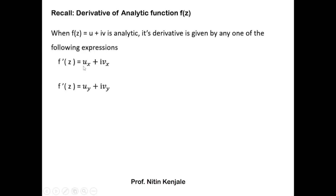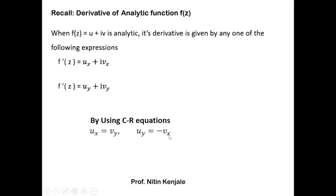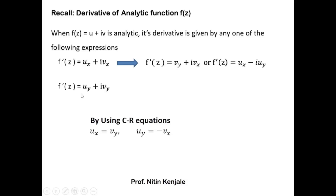But if you want to find f'(z) in terms of only u, you have to use the Cauchy-Riemann equations. The Cauchy-Riemann equations state that u_x = v_y and u_y = −v_x. So wherever u_x appears you can replace it by v_y, and you can replace v_x by −u_y, turning the expression entirely in terms of u. Similarly you can substitute these relations in the derivative of f(z) to get the required expressions.